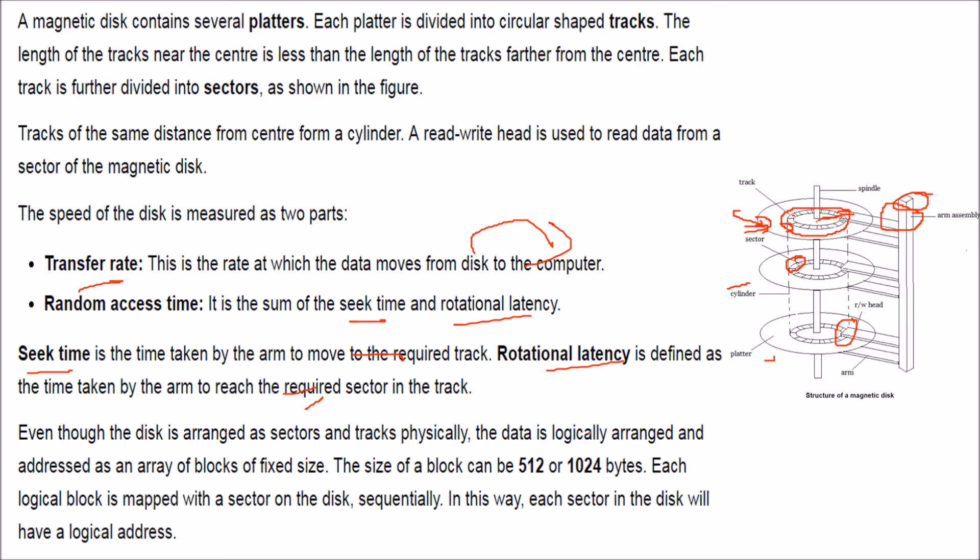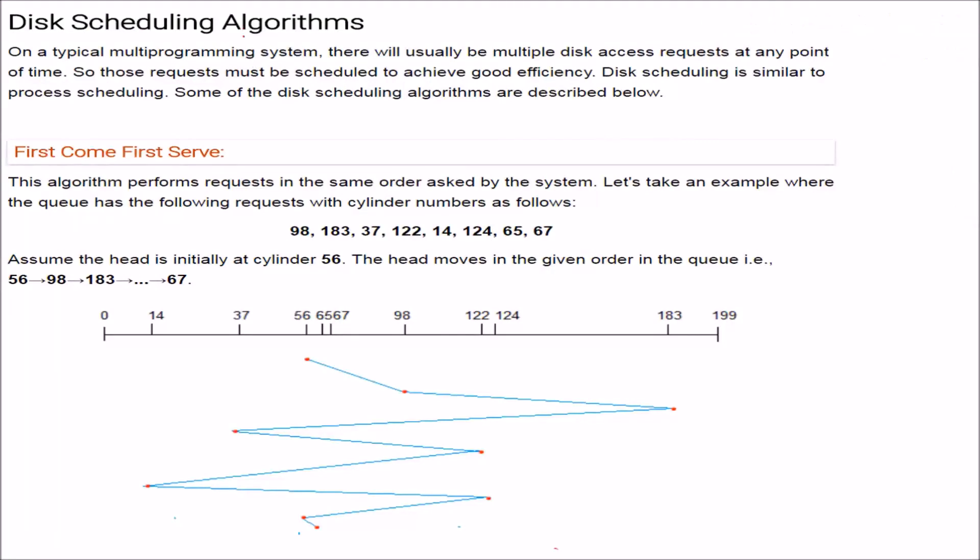Even though the disk is arranged as sectors, as you can see here, in tracks physically, the data is logically arranged and addressed as an array of blocks of fixed size. The block can be of size 512, 1024 bytes like this. Each logical block is mapped with a sector on disk, sequentially. In this way each sector in the disk will have certain logical address.